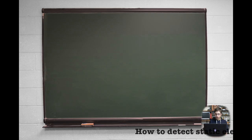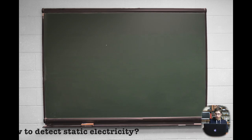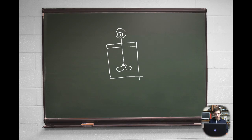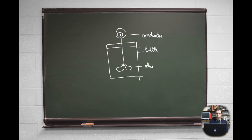We can measure how much an object is charged using an instrument called an electroscope. Here we have an electroscope. It consists of a conductor, such as copper wire, fixed in a vessel or bottle, and two aluminum leaves hanging on the hook of the conductor. Furthermore, we bend the conductor in the form of a spiral at the top, so as to make it detect charge more efficiently.